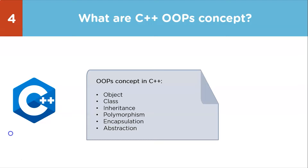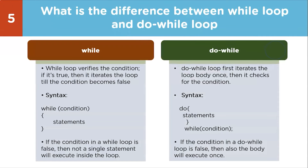Next question: what is the difference between a while loop and a do-while loop? A while loop verifies the condition first; if true, it iterates until the condition becomes false. A do-while loop first iterates the loop body once, then checks the condition. In a while loop, if the condition is false, not a single statement will execute. In a do-while loop, if the condition is false, the body still executes once.